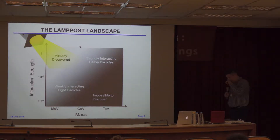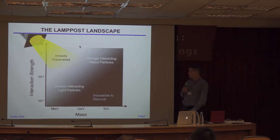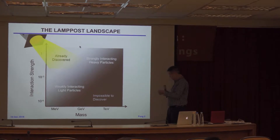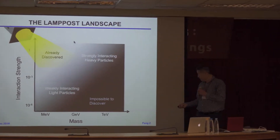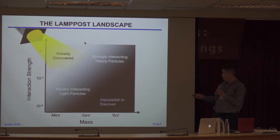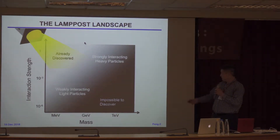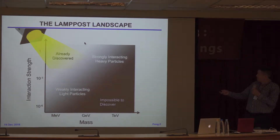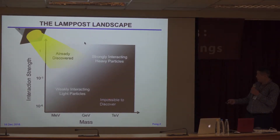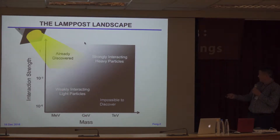We are of course looking for new particles. One way to organize this in an incredibly model-independent way is to put it on a plot where you have particles with some mass on one axis and some interaction strength on the other. You can envision what kind of particles there could be and what you could do to look for them. Up here we have already discovered weakly or strongly interacting particles that are light.